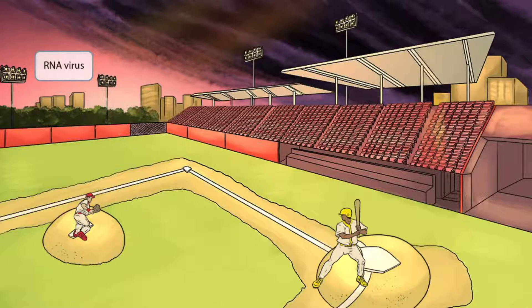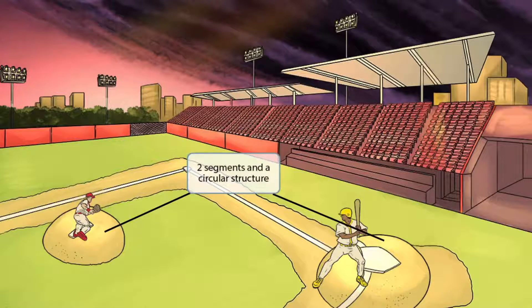Arena virus. If you look in the sky, you can see that we've included some pink colors. Just like in our other videos, this color schematic is to help you remember that arena viruses are RNA viruses. Within the baseball arena, we've shown two prominent circular mounds — one for the pitcher and one for the person who's up to bat. The two circular mounds should help you remember that there are two RNA segments to the virus and that it has a circular structure.